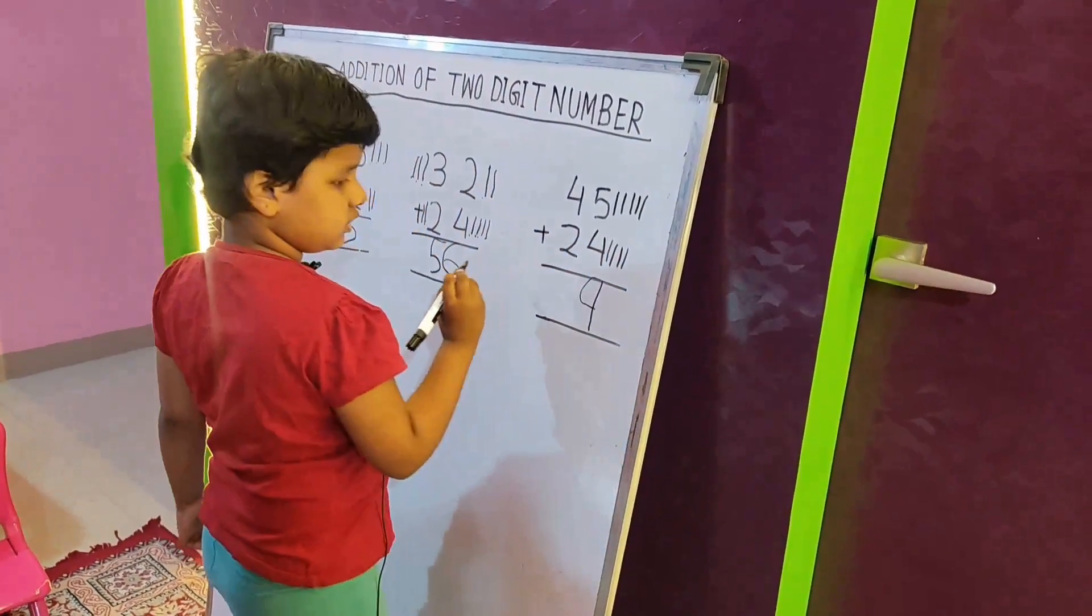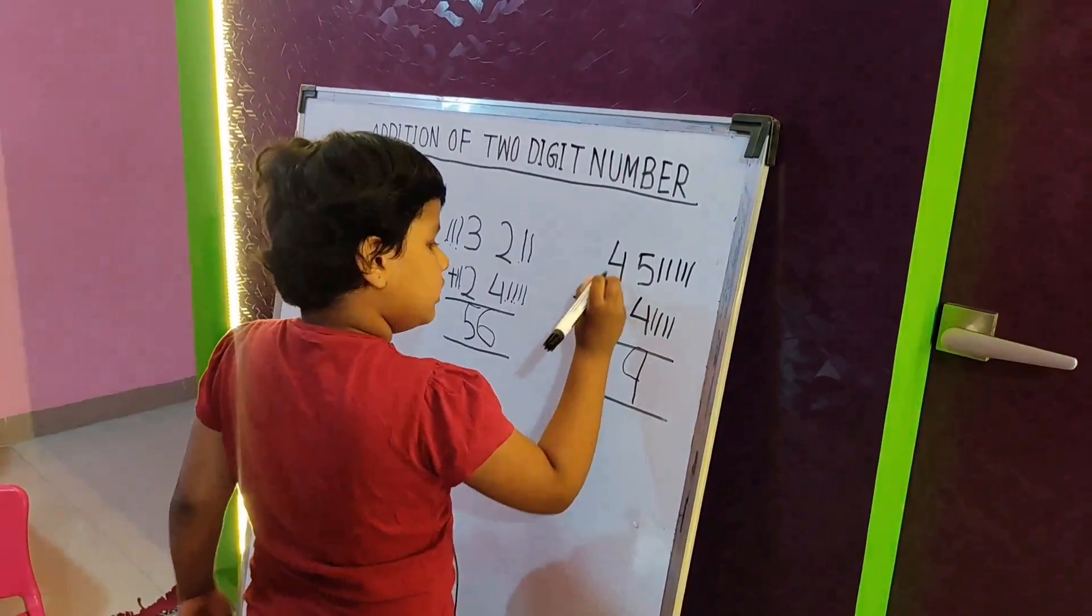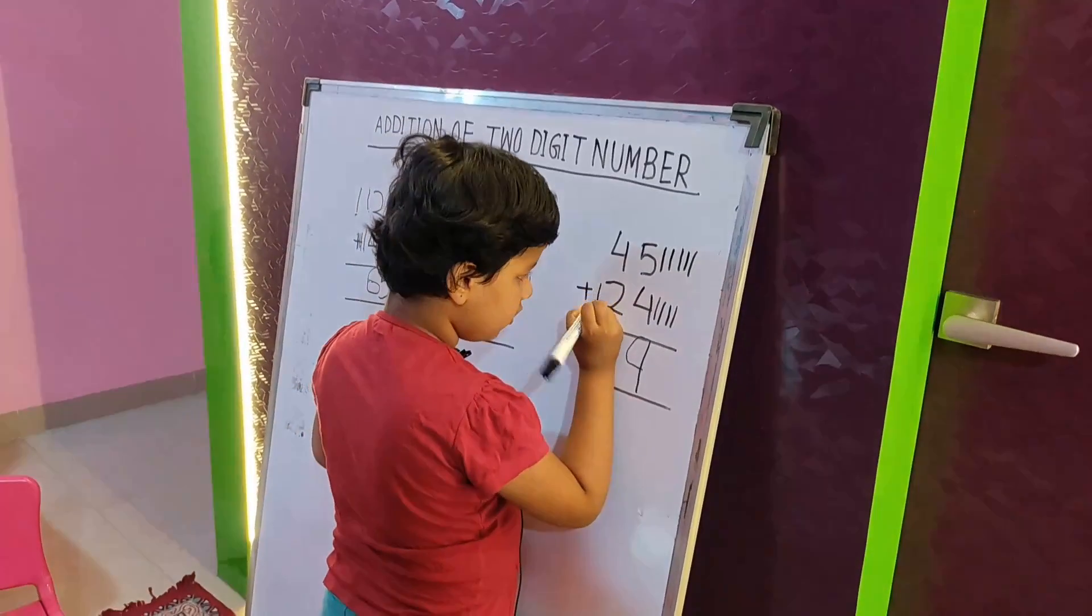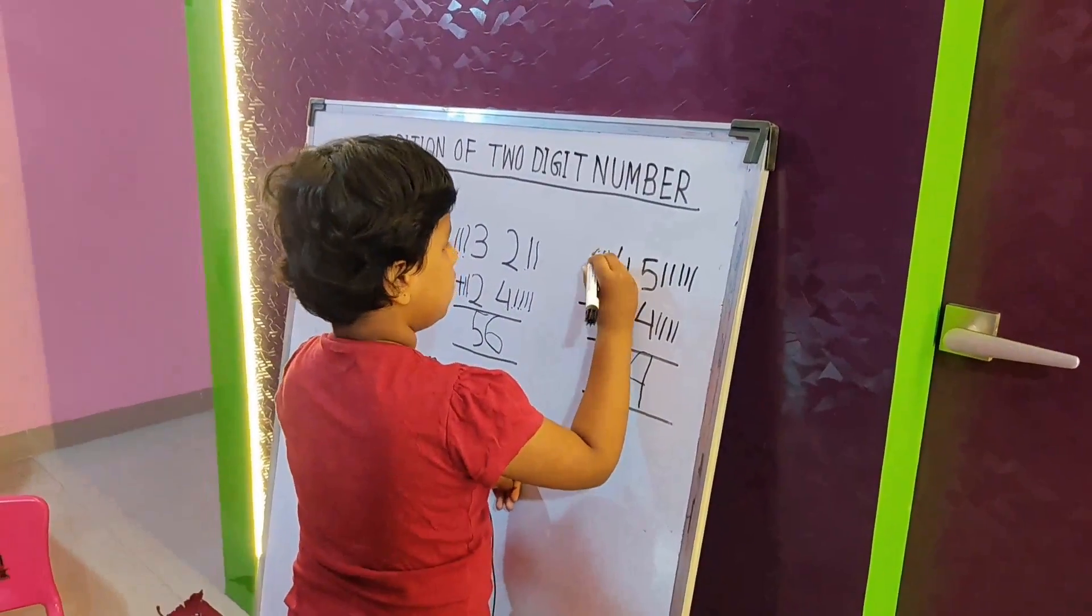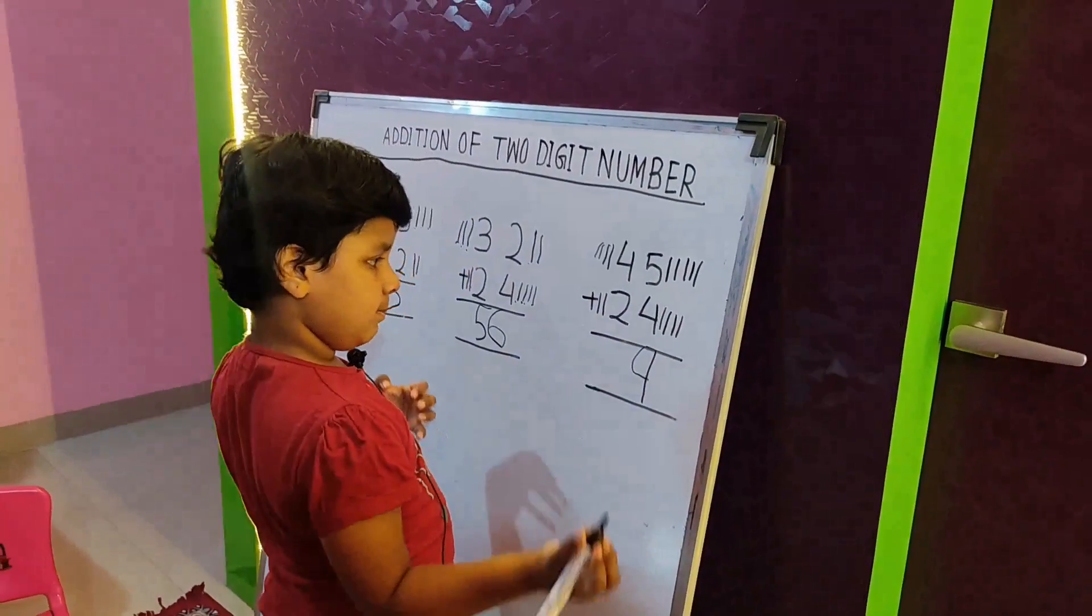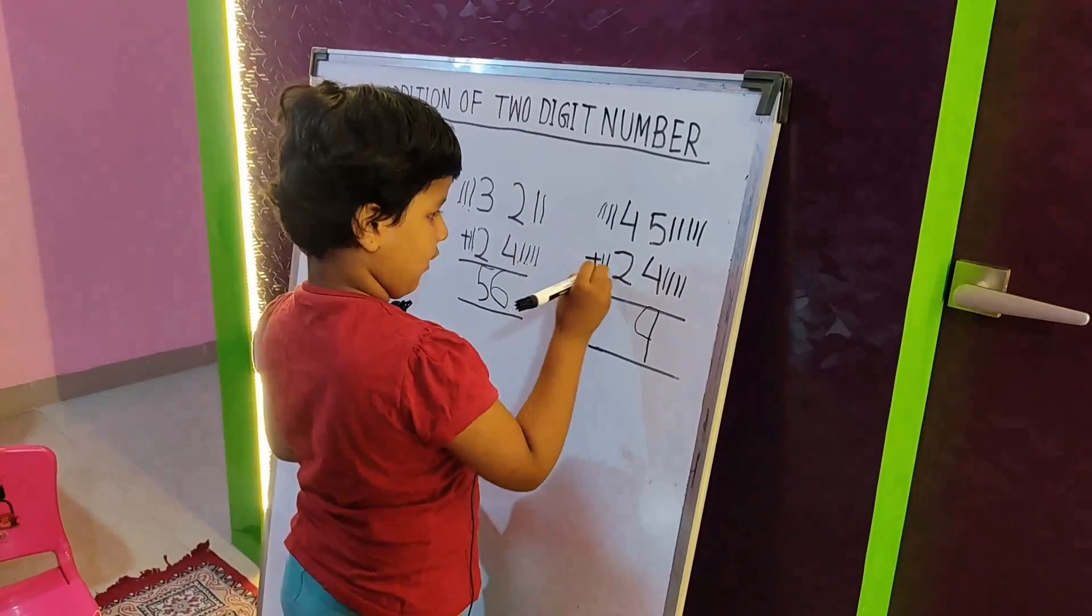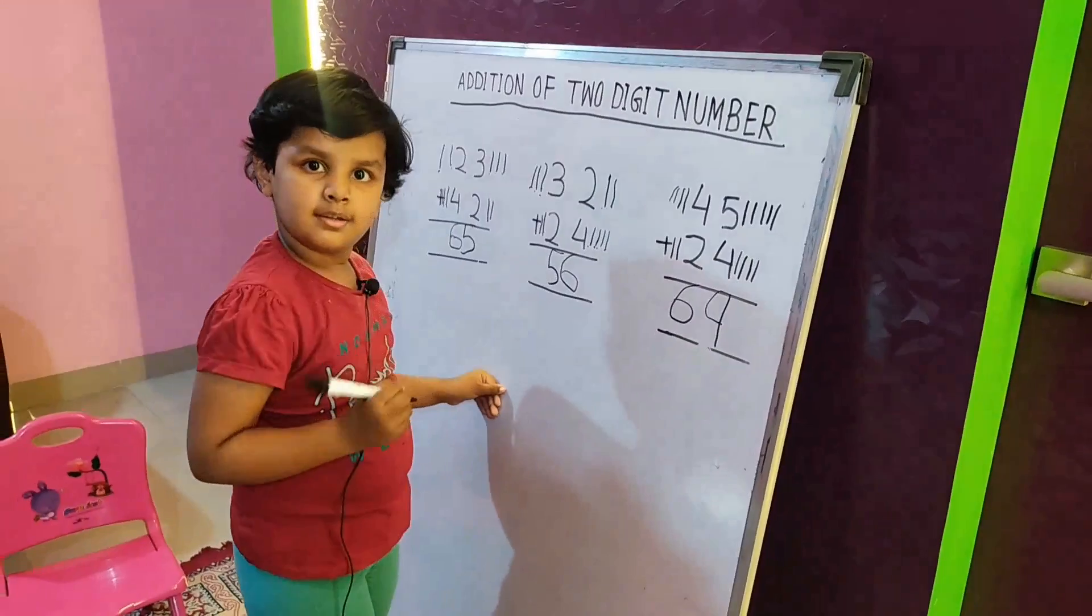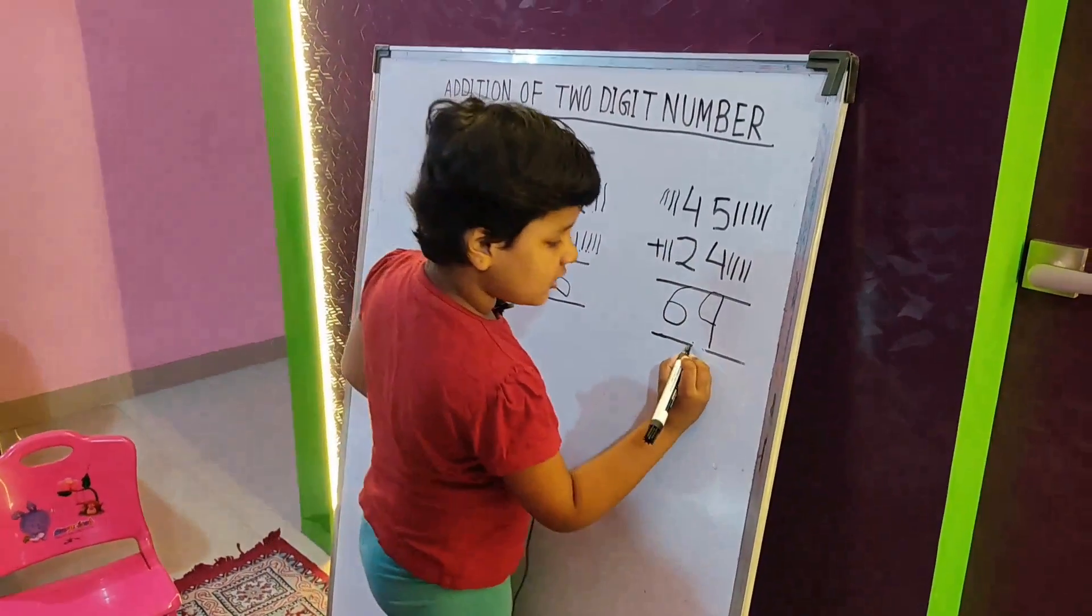This is nine. And this is four and two. No. This is four and two. Here is two. And here is four. And how many mix number? One, two, three, four, five, six. I got sixty-nine. I got sixty-nine.